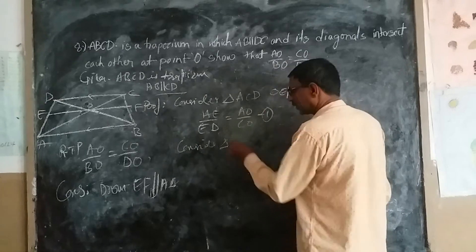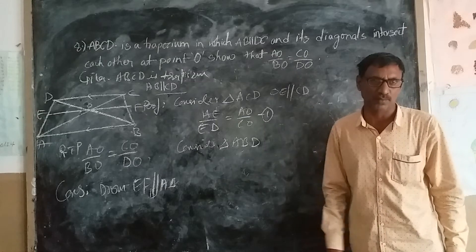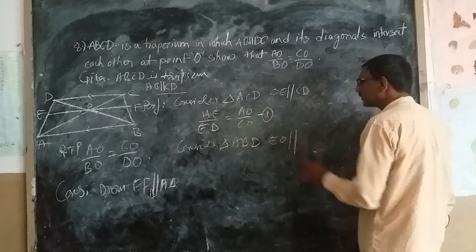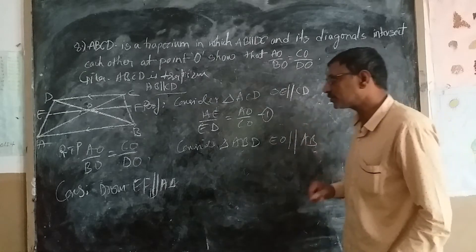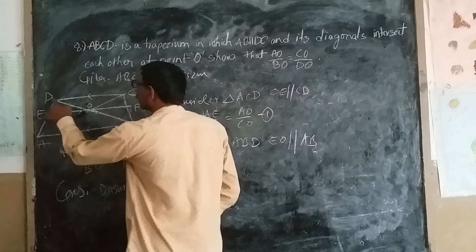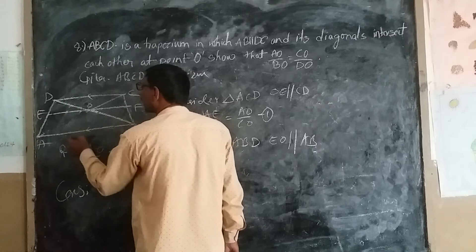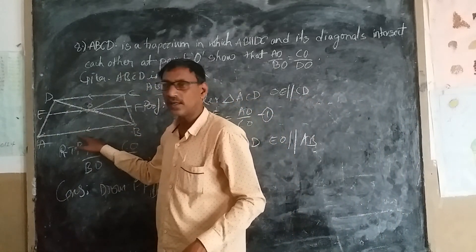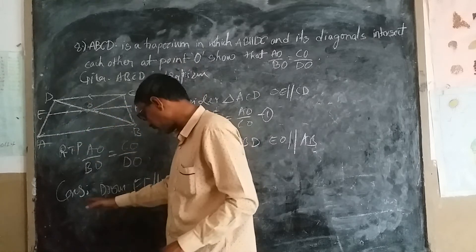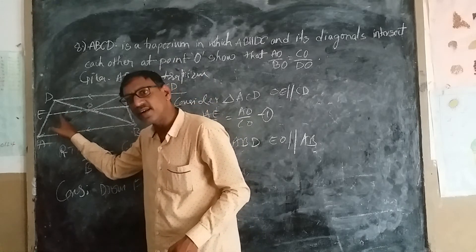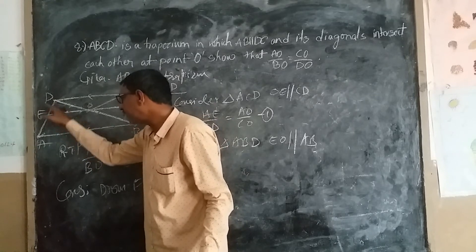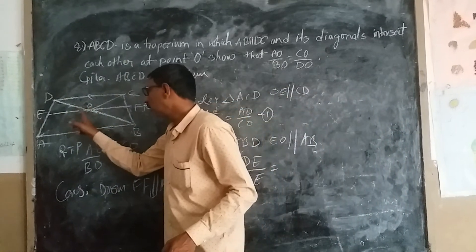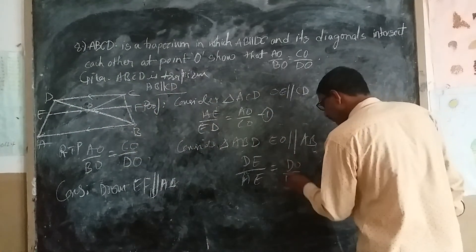Now consider triangle ABD. In this triangle, OE is parallel to AB. Again, by the basic proportionality theorem, a line drawn parallel to one side divides the other two sides in the same ratio. So DE/AE is equal to DO/BO. This is equation two.